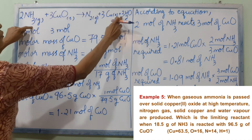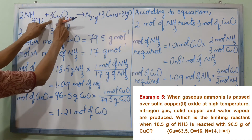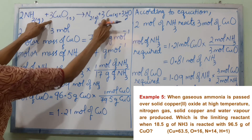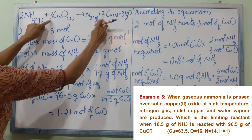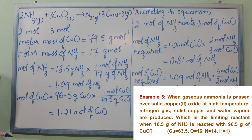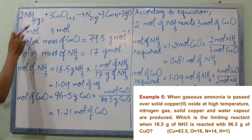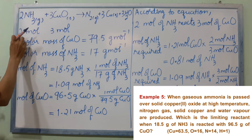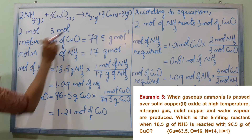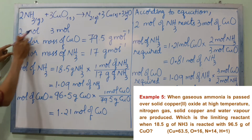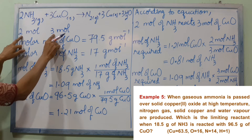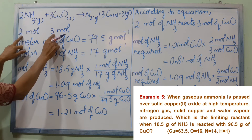To balance the equation, we balance the oxygen atoms: NH3 has 2 oxygen and CuO has 3 oxygen when balanced. This gives a stoichiometric ratio of 2 to 3 for NH3 to CuO.